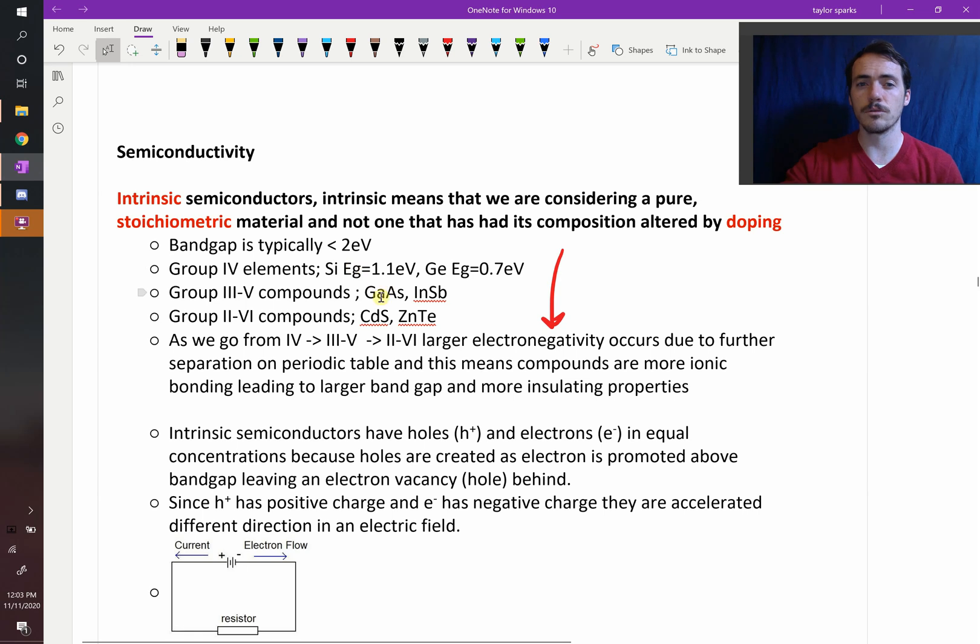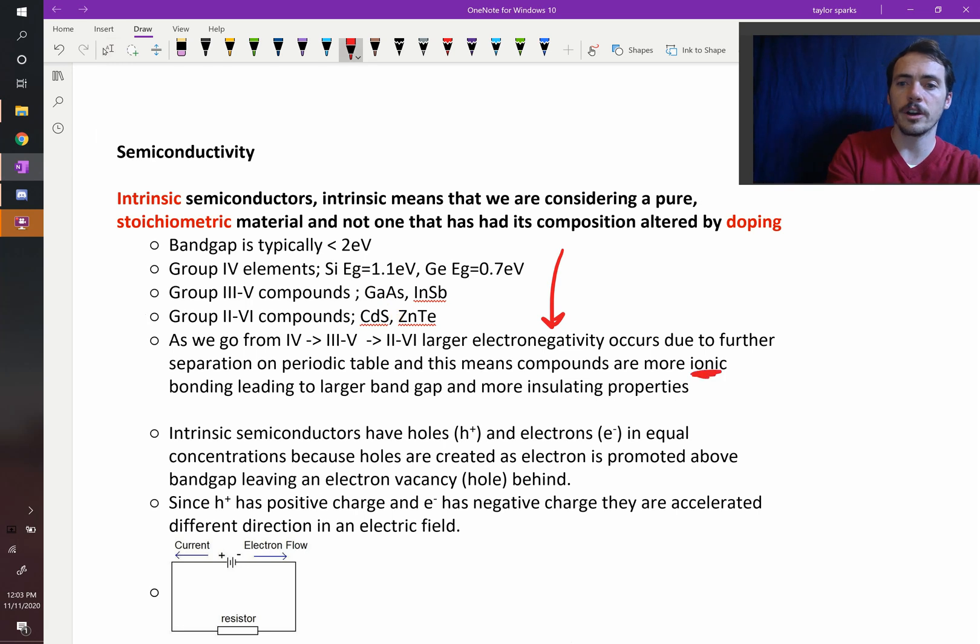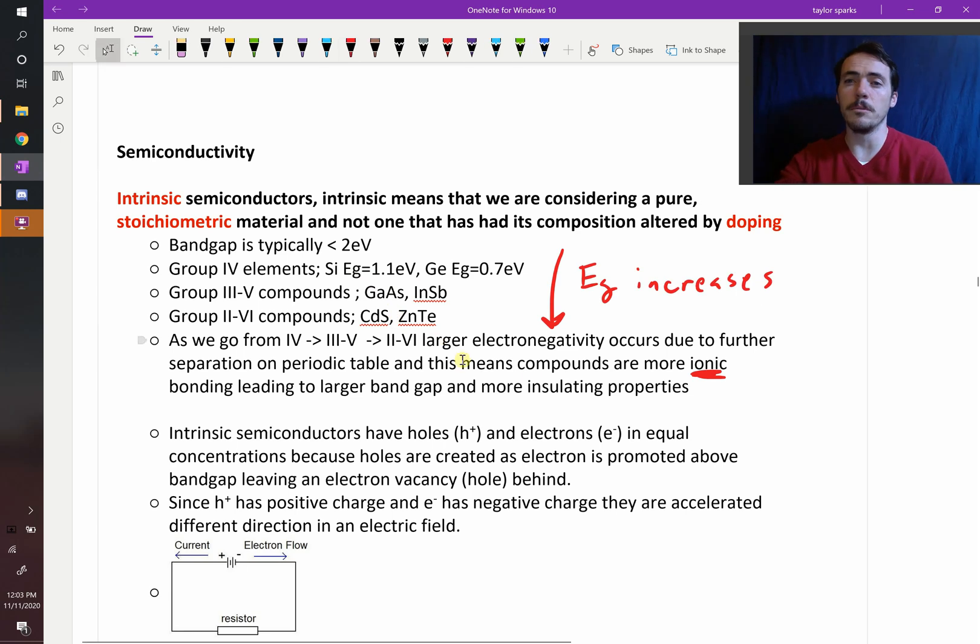Group two-six, it's a big difference. As you increase the difference in electronegativity, you make the bond more ionic. It becomes more ionic and therefore it's a stronger bond, and so the band gap increases. So your intrinsic semiconductors are going to be the most conductive for silicon and germanium because the gap is small and the least conductive as you move down this series.